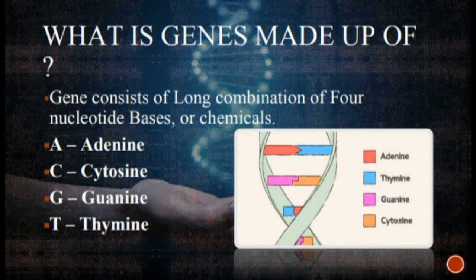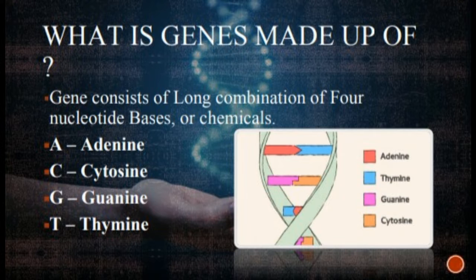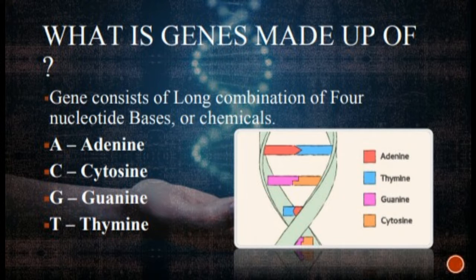What are genes made up of? Genes consist of long combinations of four nucleotide bases or chemicals. They are A, C, G, and T — A for adenine, C for cytosine, G for guanine, and T for thymine. A different combination of these gives you different traits, like the color of your eyes.